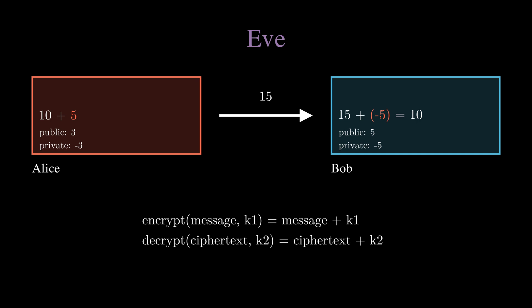One problem that public private key encryption poses is that anyone can send Bob a message. Before Bob can be sure Alice is the sender because he only shared the key with her, but now there's no identification.